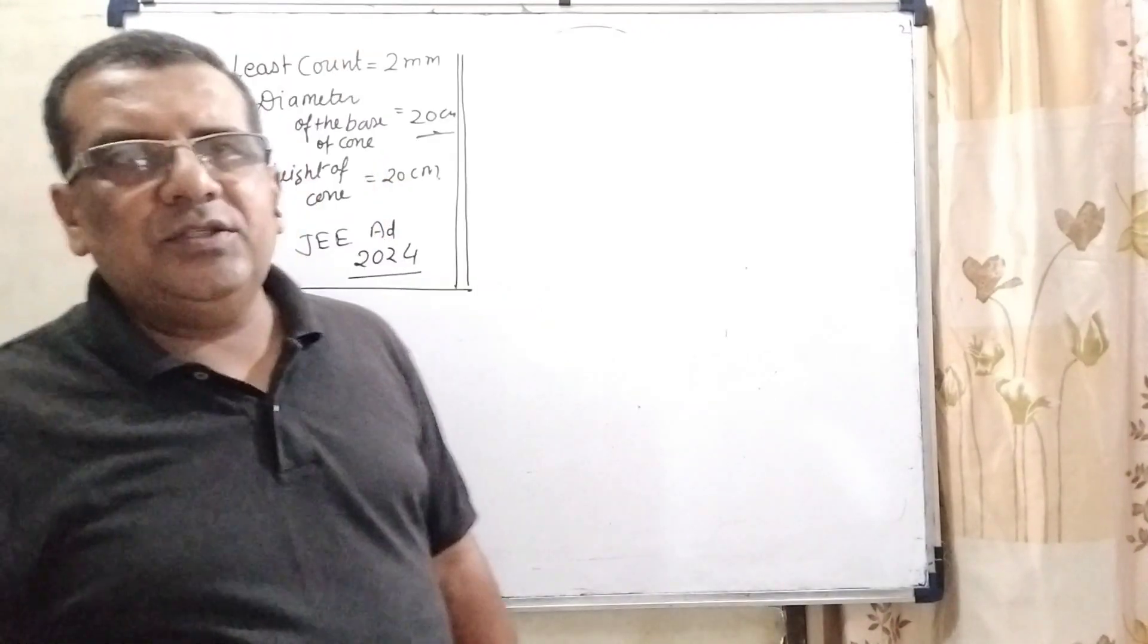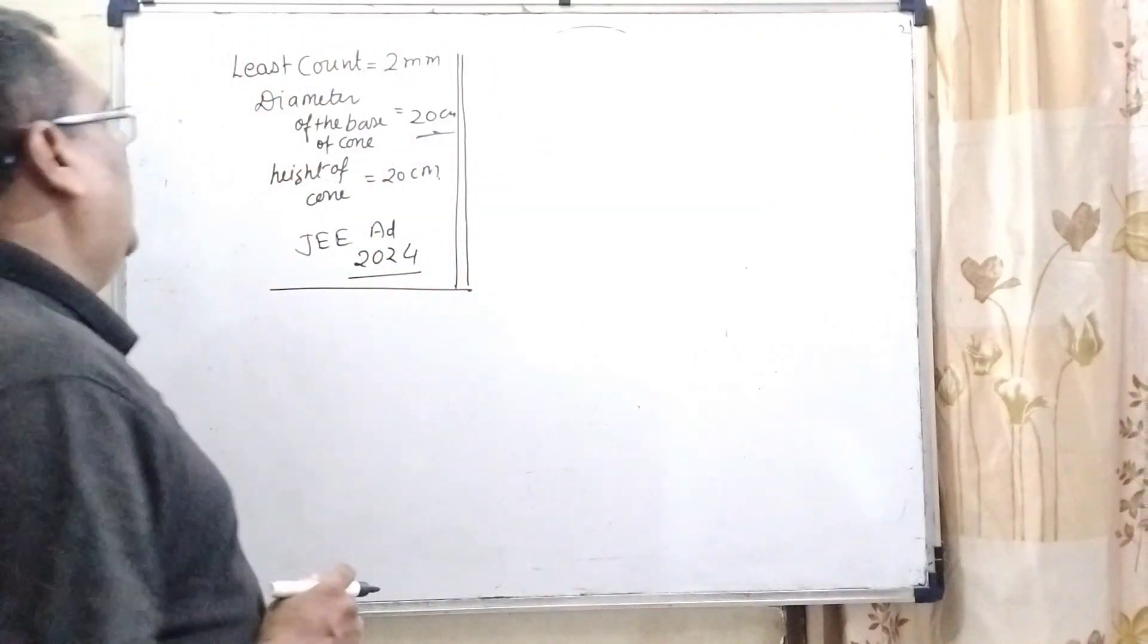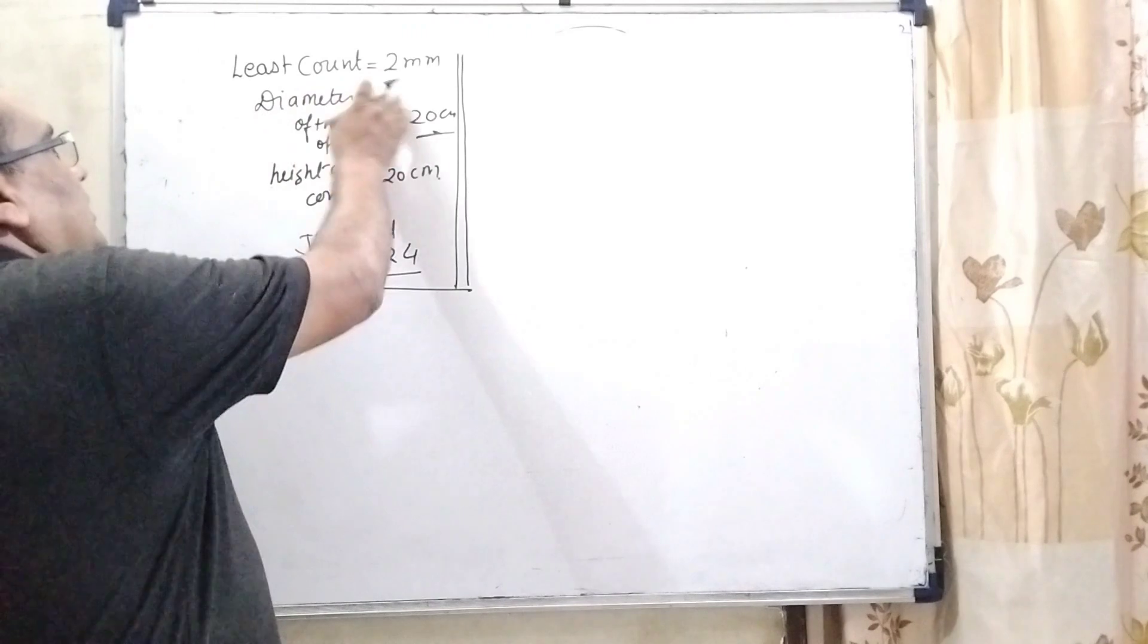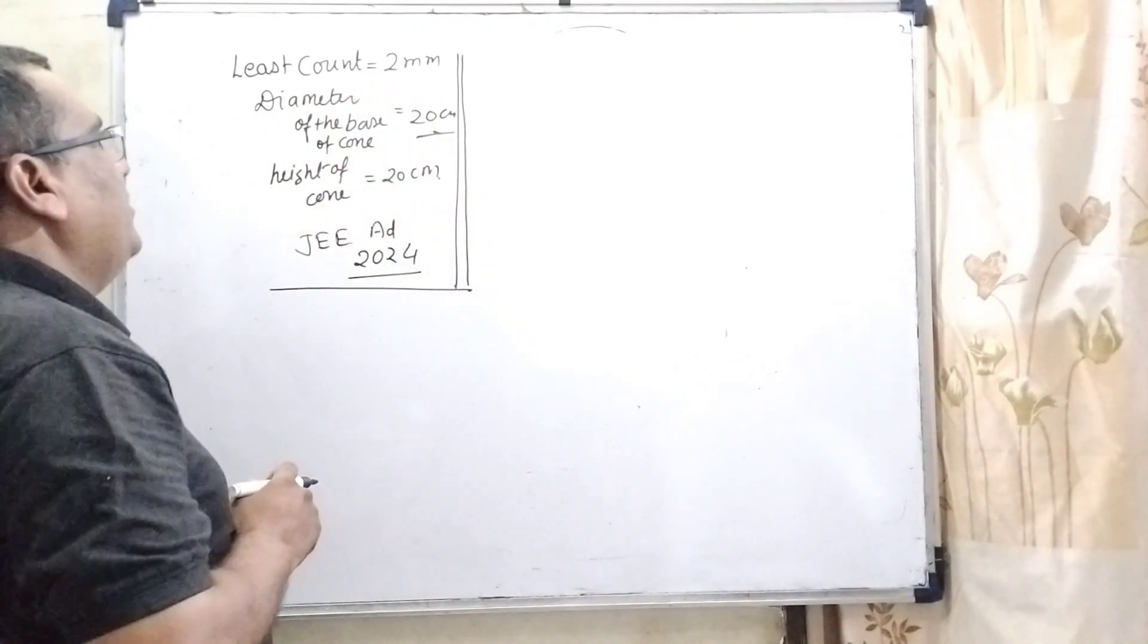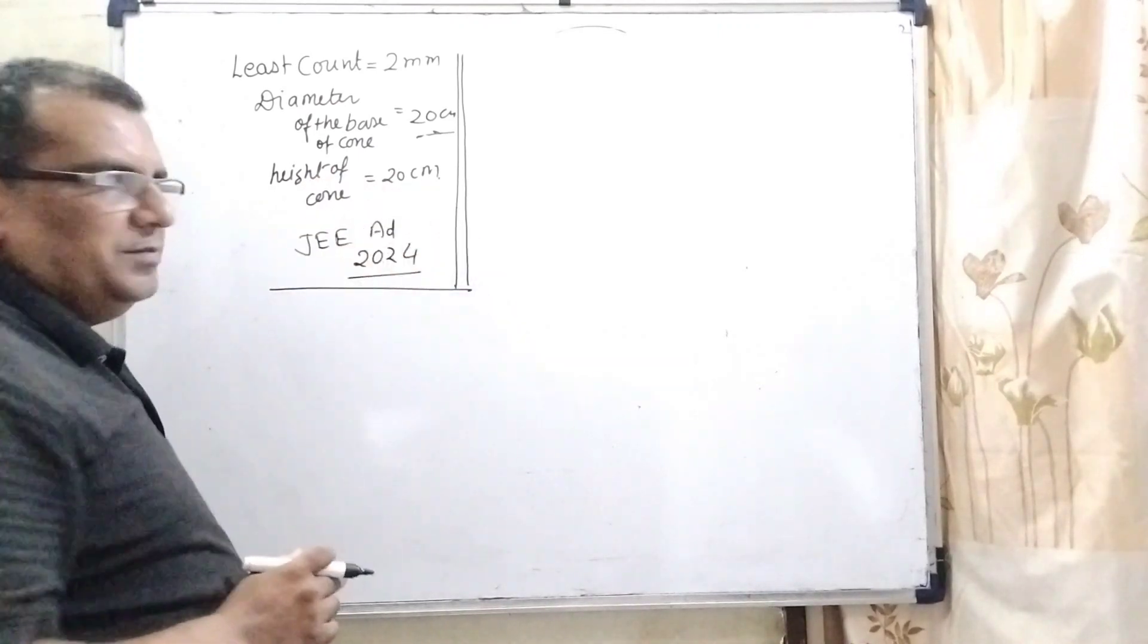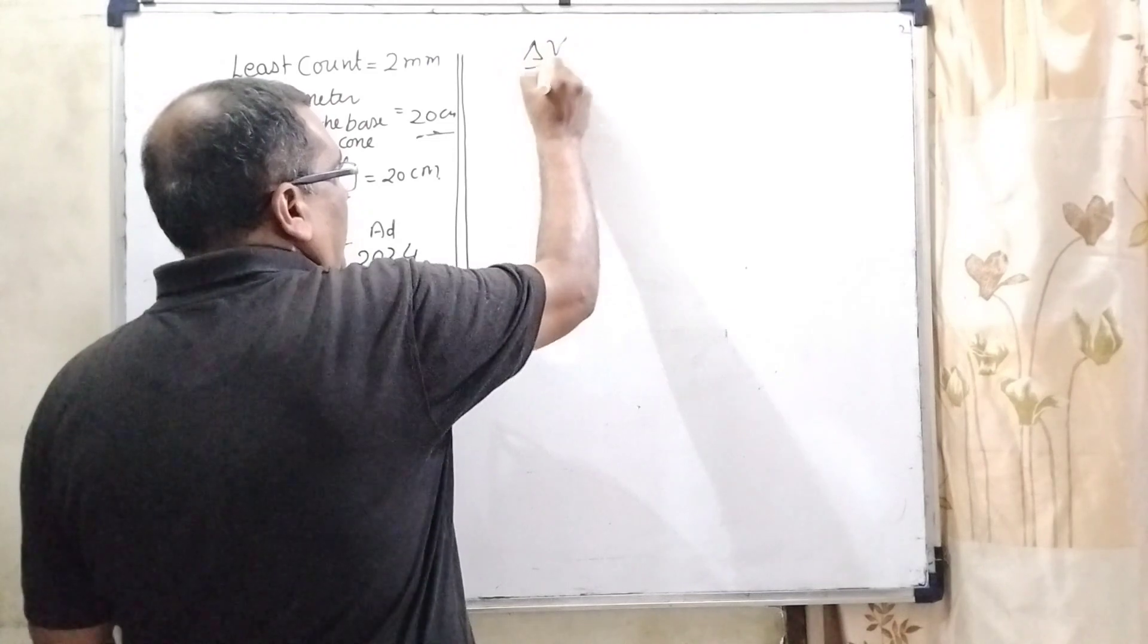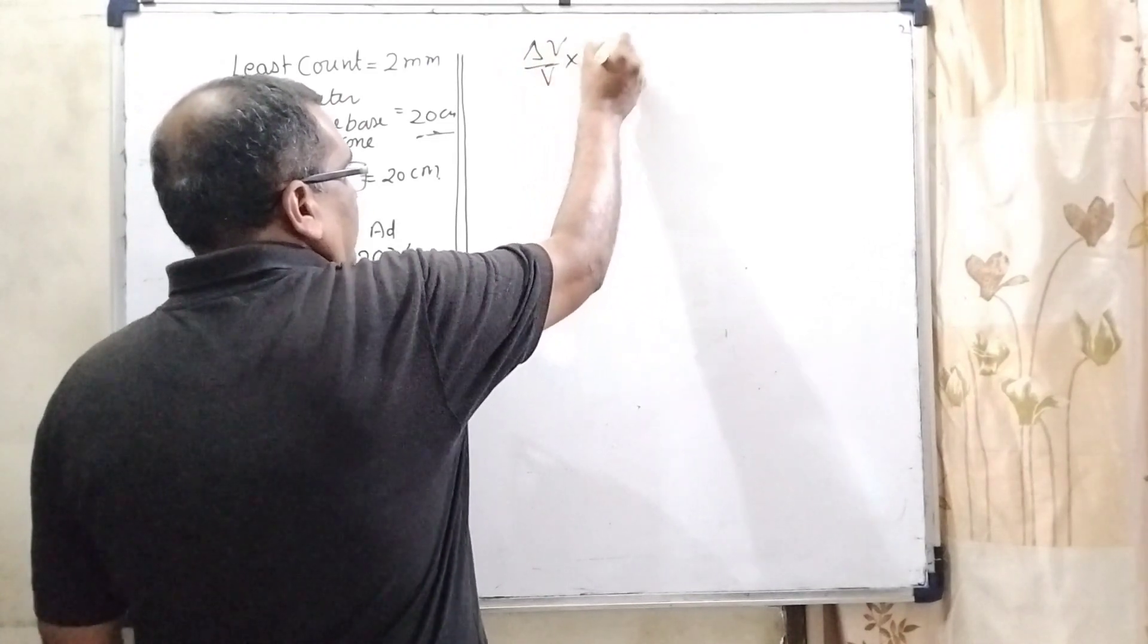This question is based on error. And here we have given a cone. The least count is given, that is 2 mm. Diameter of the base of the cone is 20 cm and height of the cone is 20 cm. And we have to find the percentage error of the volume, that is delta V by V into 100.